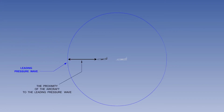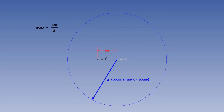Throughout our study of high speed flight, there are two major characteristics in which we are interested. The one we will illustrate now is the proximity of the aircraft to the leading pressure wave. The second characteristic is the formation of shock waves, which we will look at later. There is a ratio between the aircraft true air speed and the local speed of sound. This ratio is called the Mach number, usually shortened to M.